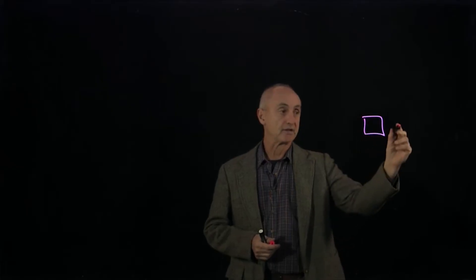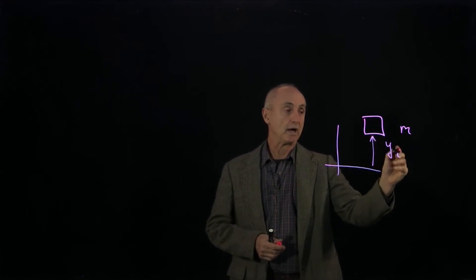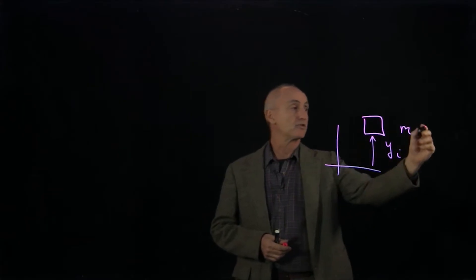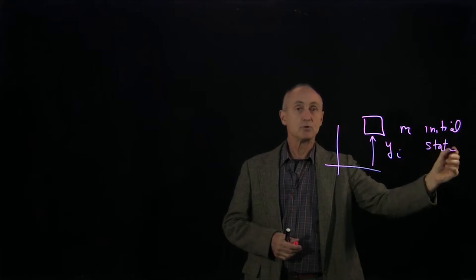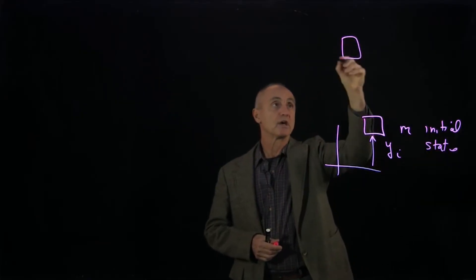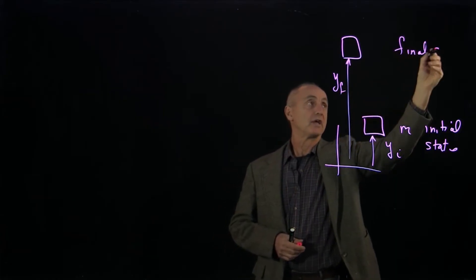Suppose you have an object of mass m, and it's located at a certain height yi initial. So this is our initial state. And we would like to move this object upwards, so it goes up to a height y final. This is our final state.